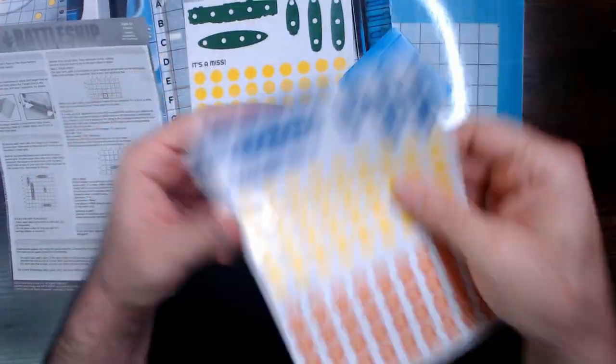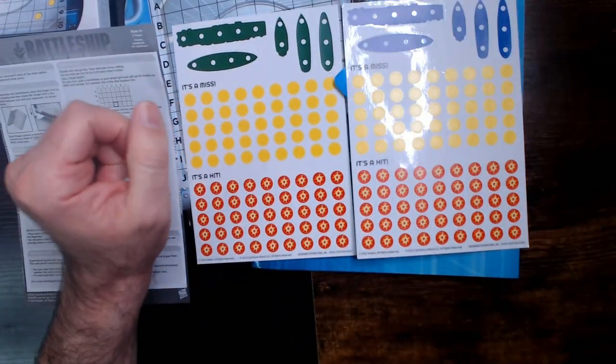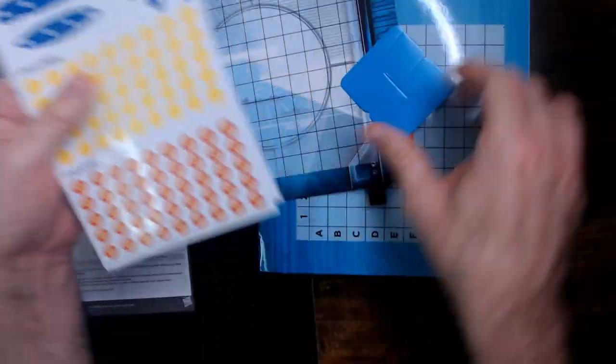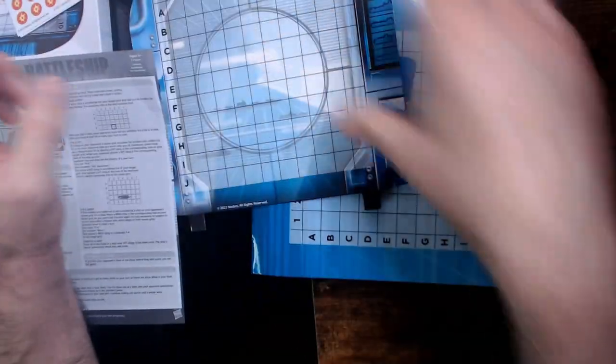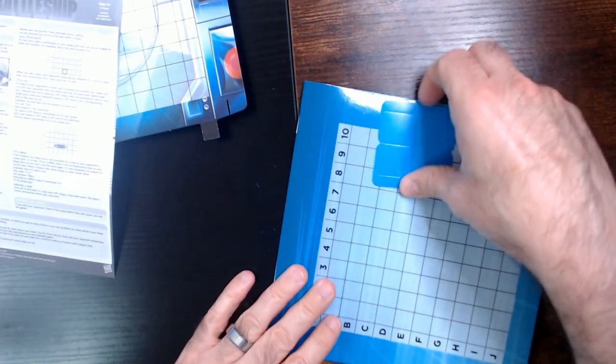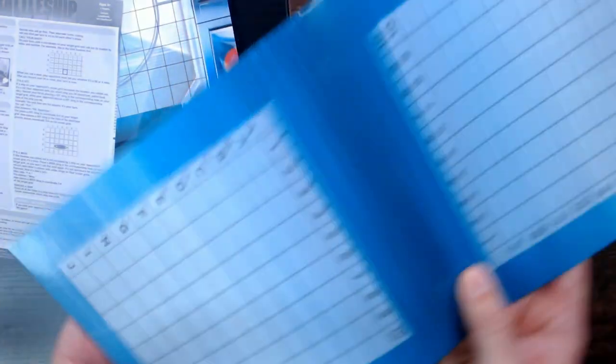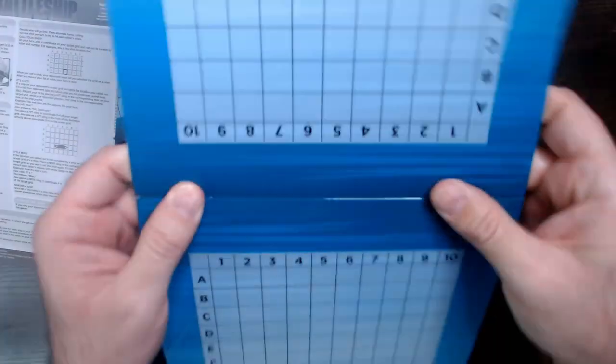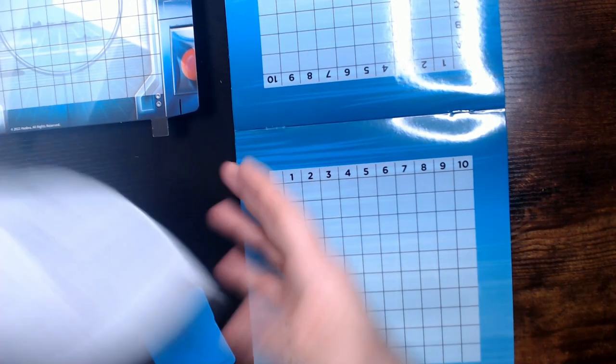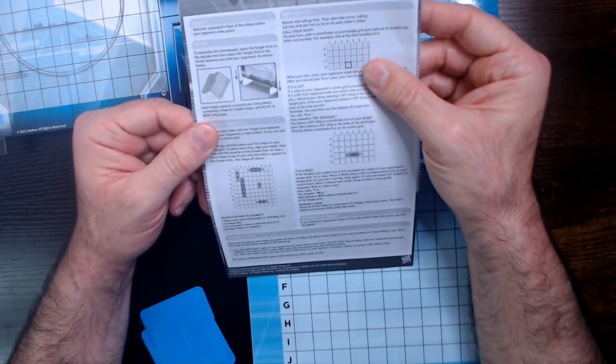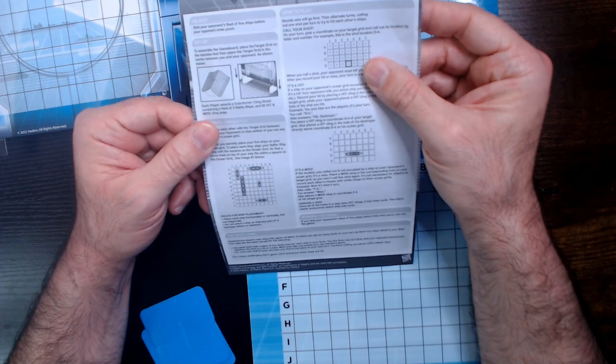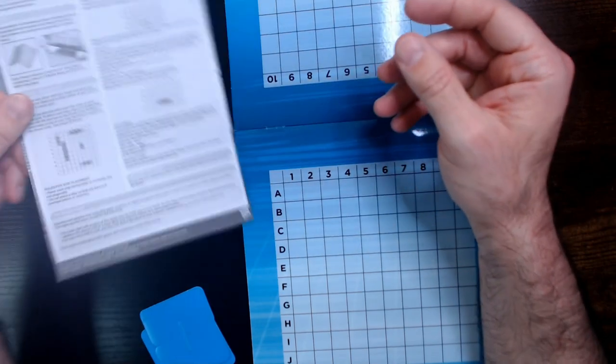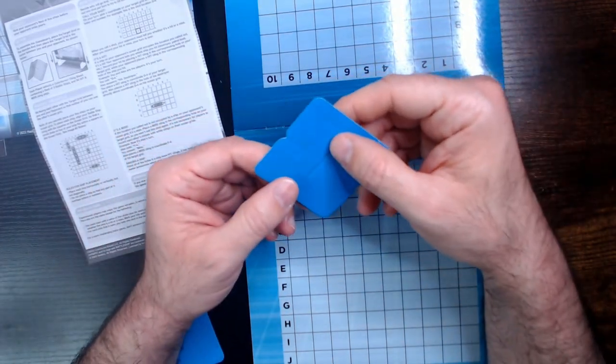So we got blue ships and green ships. Got our main board here. It's a decent size, actually not too bad. And we fold these two tabs.